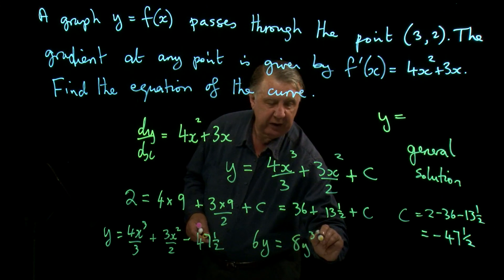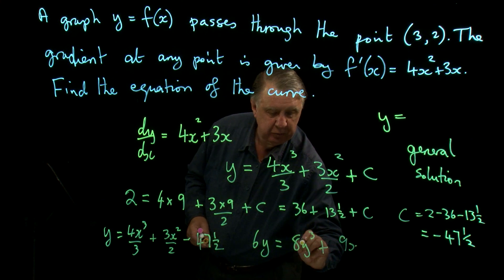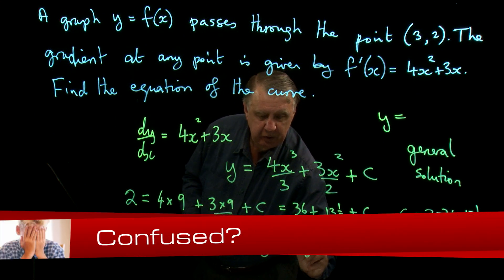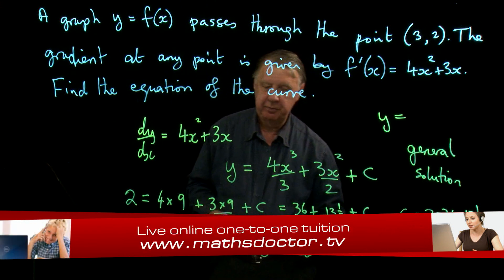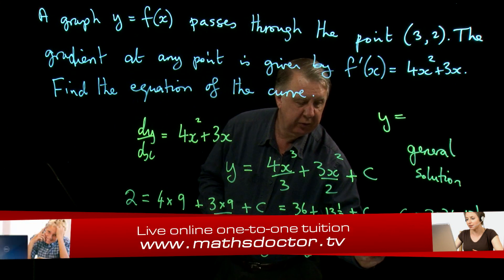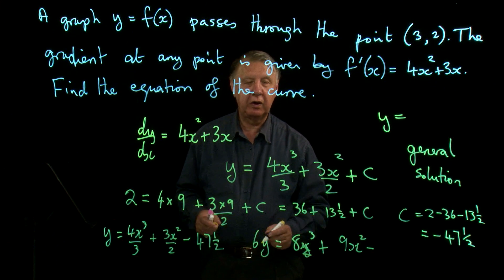6 times that is 9x. Whoops, I don't mean that. Do I mean x³? Let's get it right. 9x² minus then unfortunately I've got to do 6 times 47 and a half. Now, let's do 6 times 47, 282, and then 6 halves of 3 gives me 285.